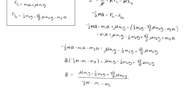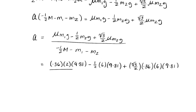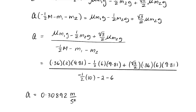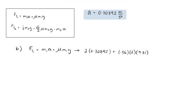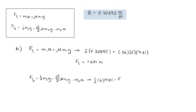Plugging in all values, acceleration equals 0.30892 meters per second squared. Now we can solve for the tensions using the equations derived earlier. Force of tension 1 equals mass 1 times acceleration plus mu times mass 1 times gravity, which equals 7.681 newtons. Force of tension 2 equals one-half mass 2 times gravity minus root 3 over 2 times mu times mass 2 times gravity minus mass 2 times acceleration, which equals 9.226 newtons.